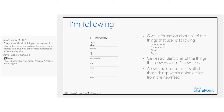The I'm Following section gives a snapshot of everything I'm following — people, documents, sites, and tags — and I can drill in to see a full list of each type.